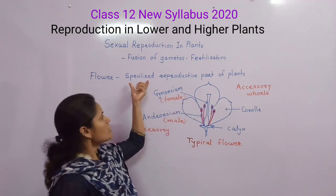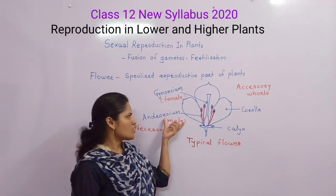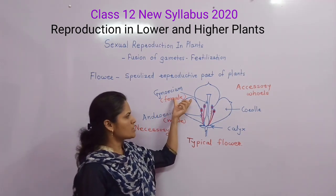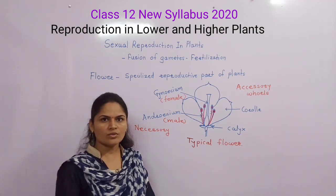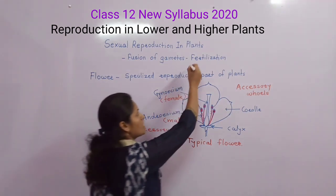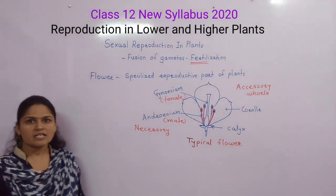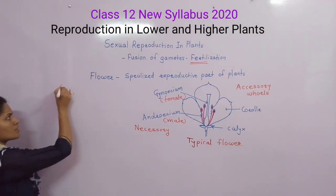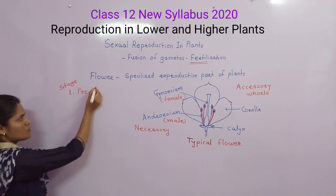As the flower is the specialized reproductive part of a plant, male gamete formation takes place within the androecium and female gamete formation takes place within the gynoecium. The structure of a typical flower helps us understand sexual reproduction in plants, which includes male-female fertilization. Sexual reproduction in plants consists of three stages. The first stage is the pre-fertilization process.